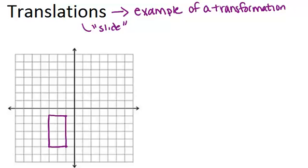So for example we could take this rectangle and translate it with the rule that every point (x,y) goes to the new point (x+4, y+2).